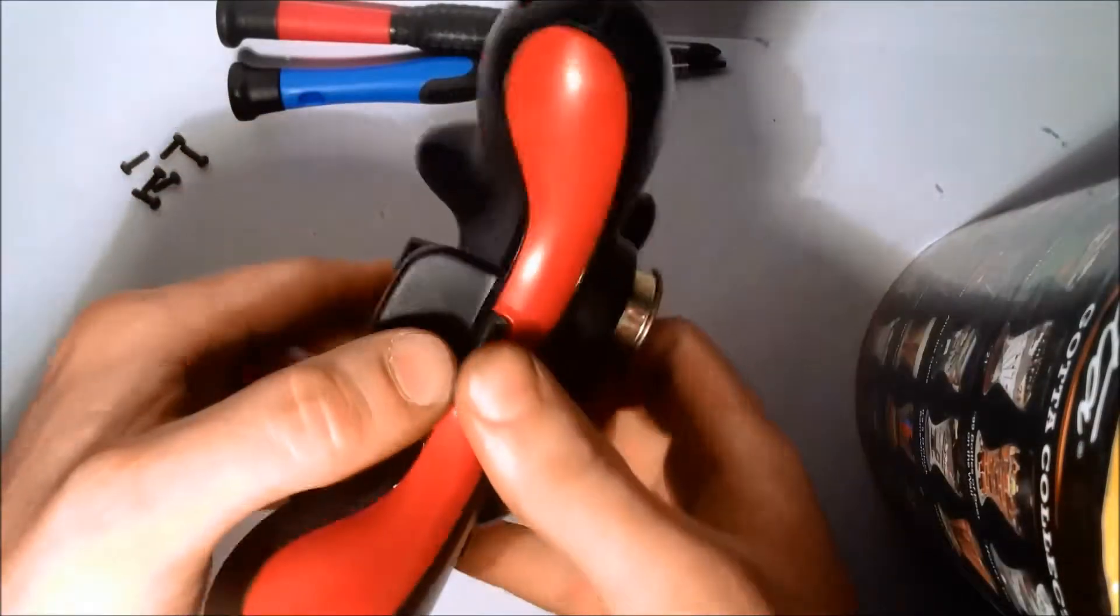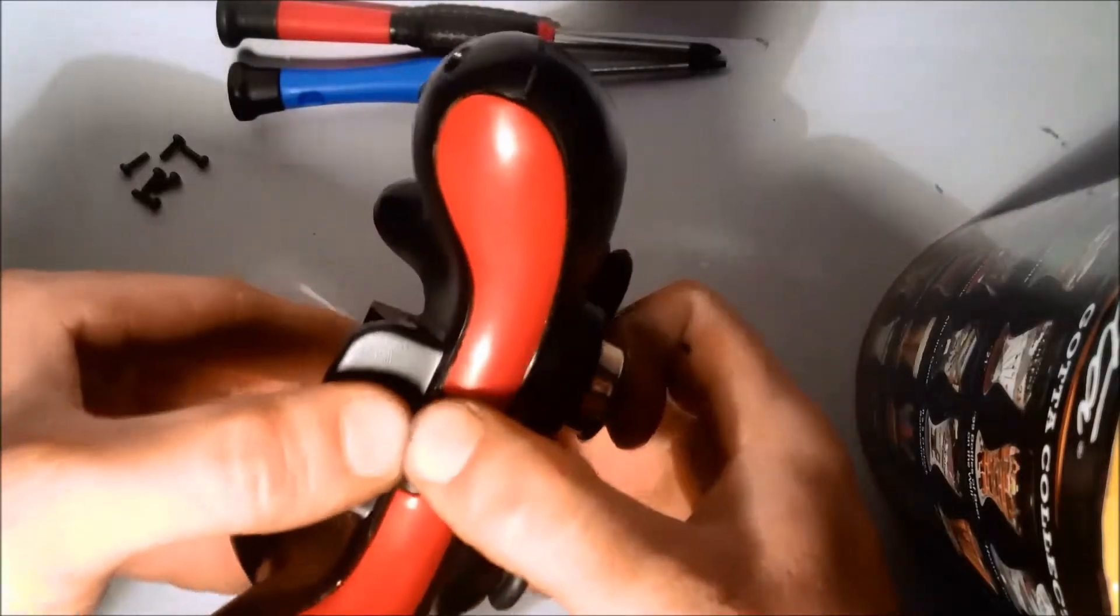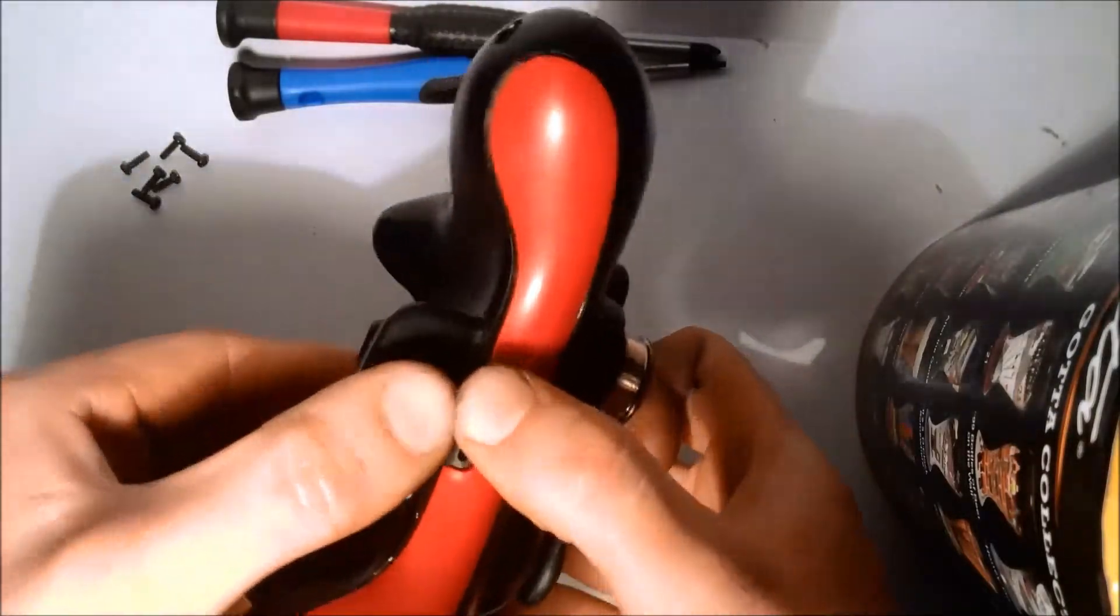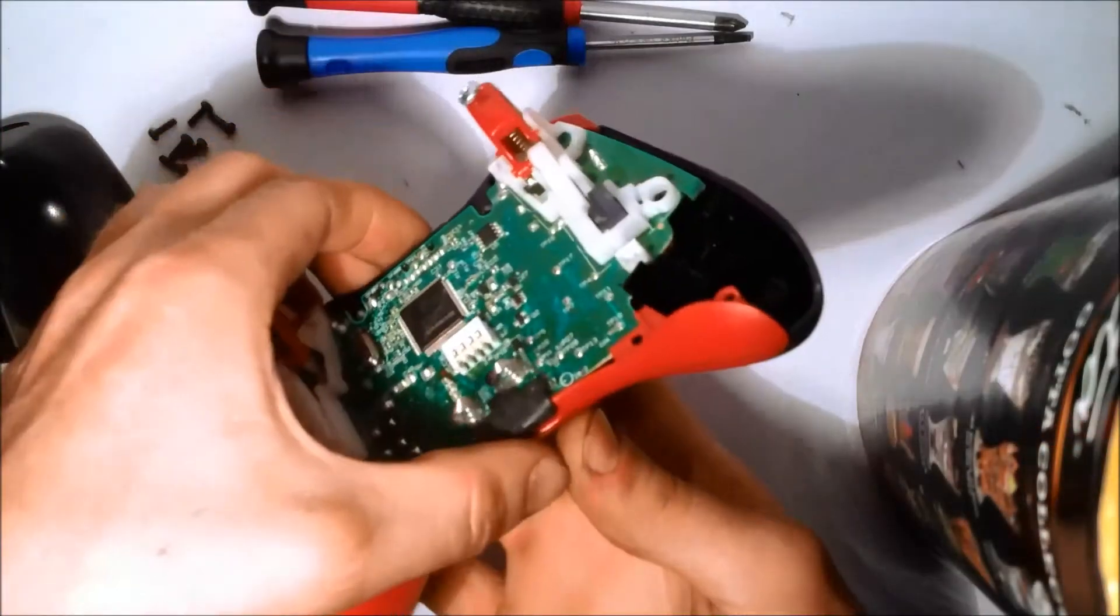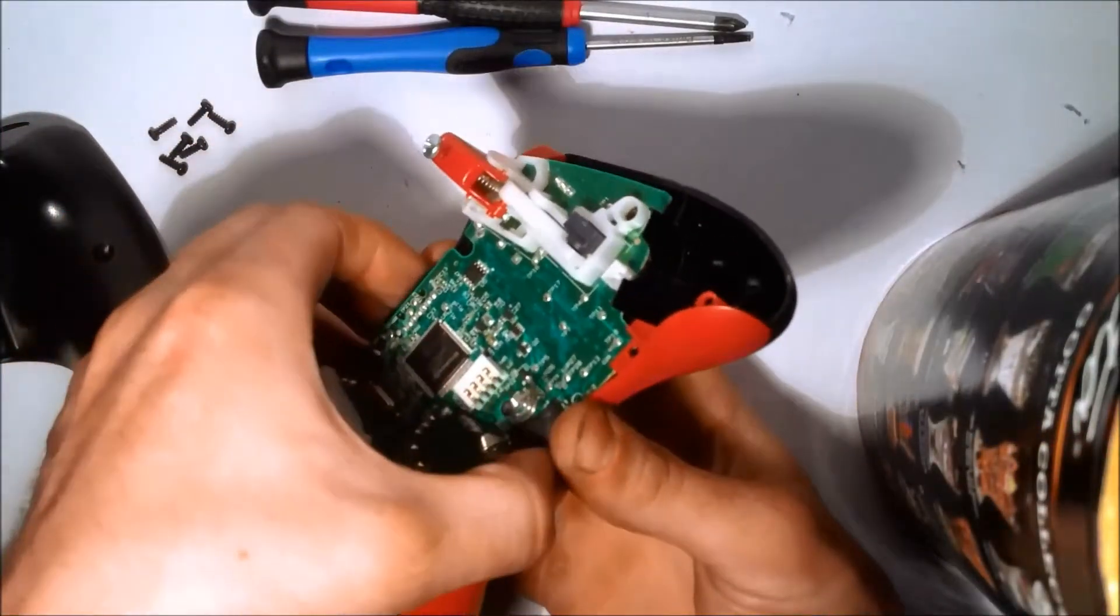Once all the screws are removed, grab the controller and start wiggling it back and forth to take the back cover off. Next, you're going to take the board out by grabbing it and wiggling it again to get it out as well.